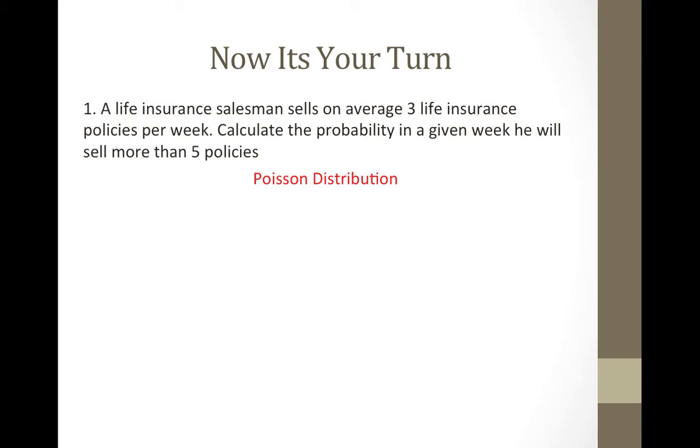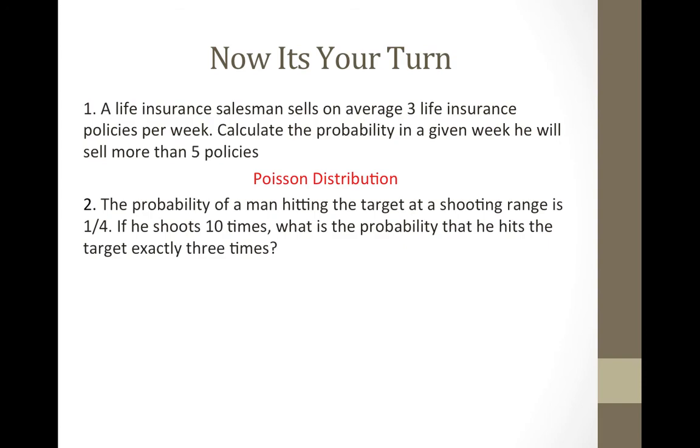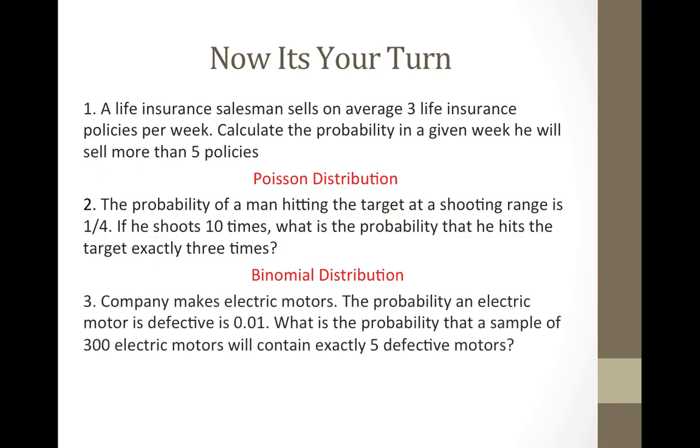The probability of a man hitting the target at a shooting range is a fourth. If he shoots ten times, what is the probability that he hits the target exactly three times? The answer is binomial distribution. It is binomial because we see that we are given an exact probability, a fourth or twenty-five percent. We are also given a fixed number of trials, ten, which as you can see from the first example, there are no number of trials listed because Poisson has an infinite sample space.